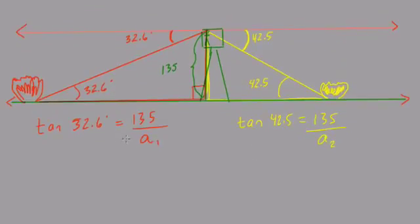So here, we want to know what the adjacent sides are. So in both equations, I multiply both sides by A. What will happen is, in the left-hand equation, we have A1 times the tangent of 32.6 degrees equals 135. And in this equation, over here, we'll have A2 times the tangent of 42.5 degrees equals 135.